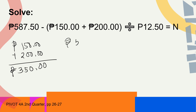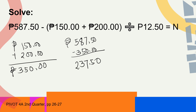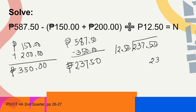We can now subtract 350 from 587.50. 587.50 minus 350 equals 237 pesos and 50 centavos — that is still needed. Since he saves 12.50 a day, we divide 237.50 by 12.50. The divisor has a decimal, so we move 2 places to the right to make it a whole number: 23,750 divided by 1,250.